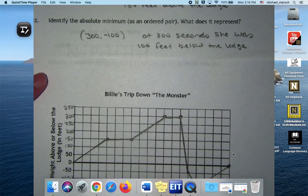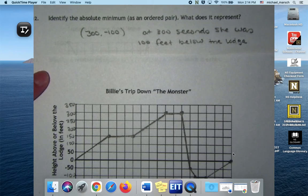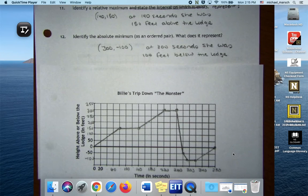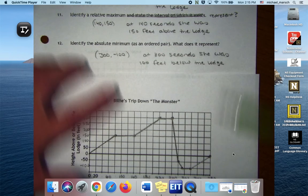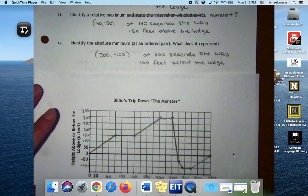So then absolute minimum could be any ordered pair that is down here. Do you have to explain something? I mean in theory you should be able to write—we'll see what happens when I go back and look at the quiz this afternoon. It's not really negative 100 feet, we're not talking about sea level, we're talking about the lodge. So this negative 100 stands for feet below the lodge, not below sea level.